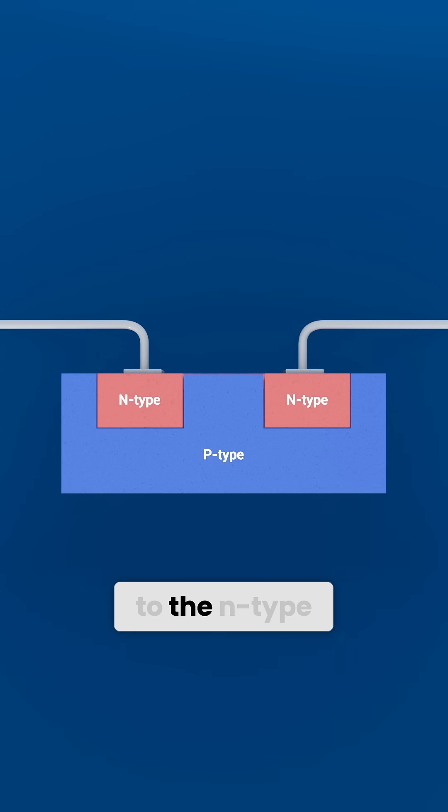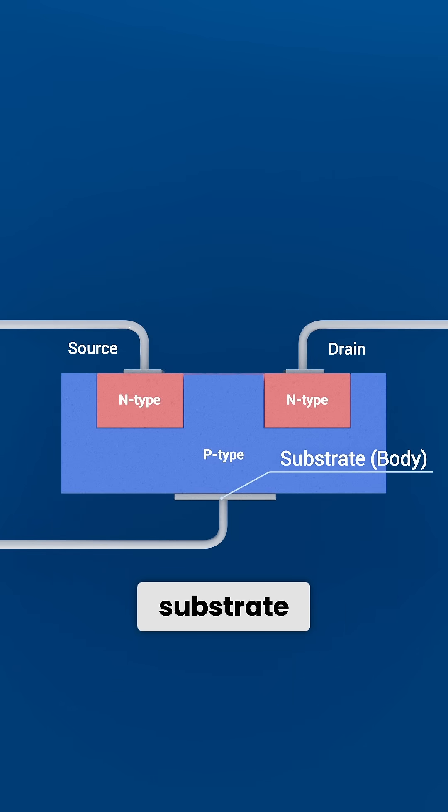Let's connect two terminals to the N-type regions called source and drain. On the P-type region, we connect another terminal called the substrate.